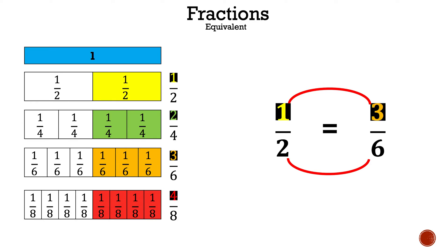Now let's take a look at one-half and three-sixths. We know that those are equal by looking at the screen — they share the same amount of space. So how do we get there? How do we get one to three? How do we get two to six? Well, we can multiply each number by three. One times three gives me three, and two times three gives me six. And if we go the other way, if we divide by three, we'll come up with one-half. So they're still going to give you the same amount of space.